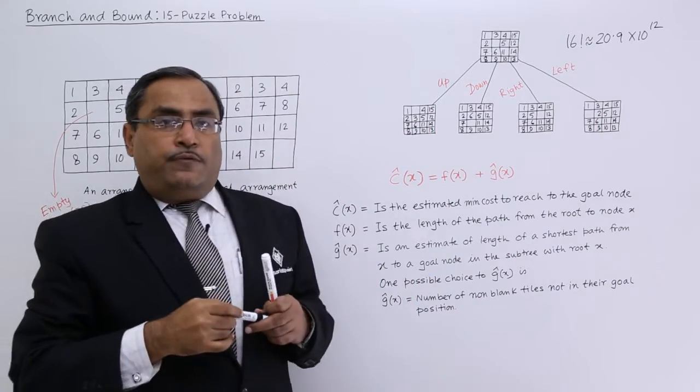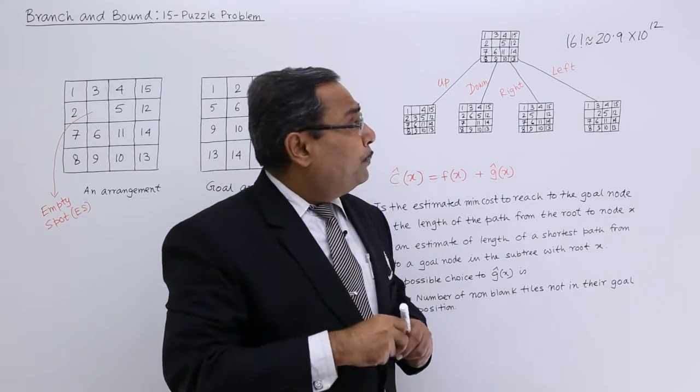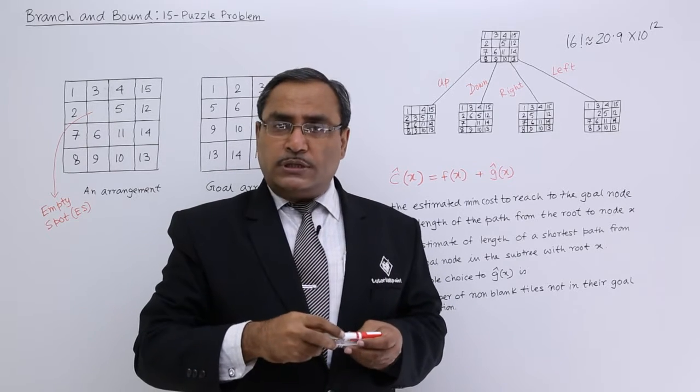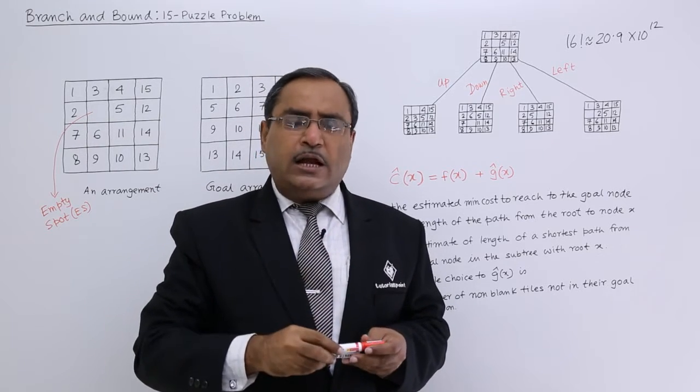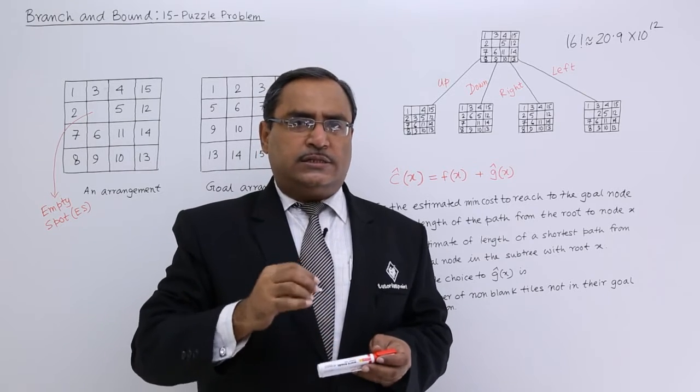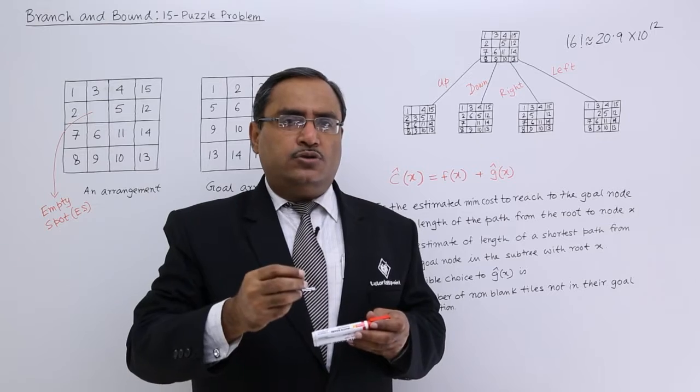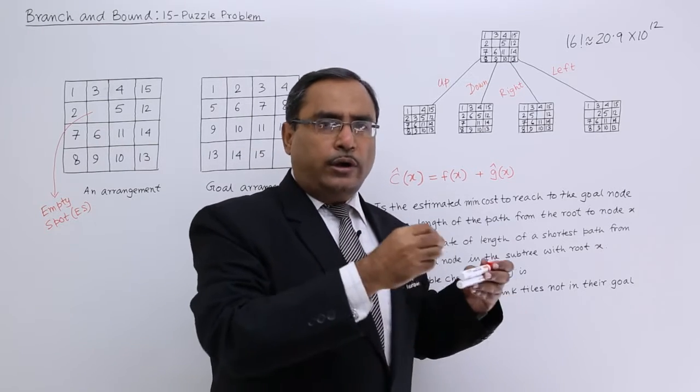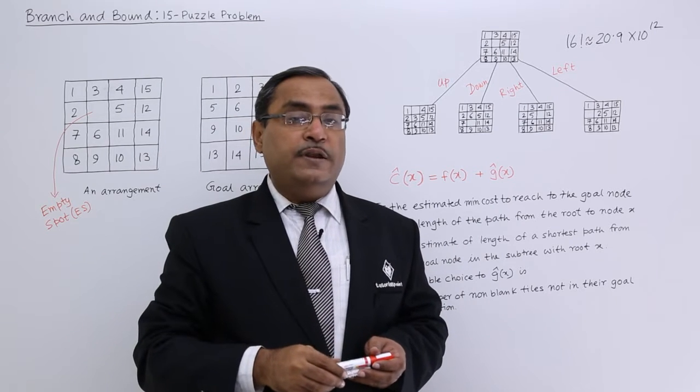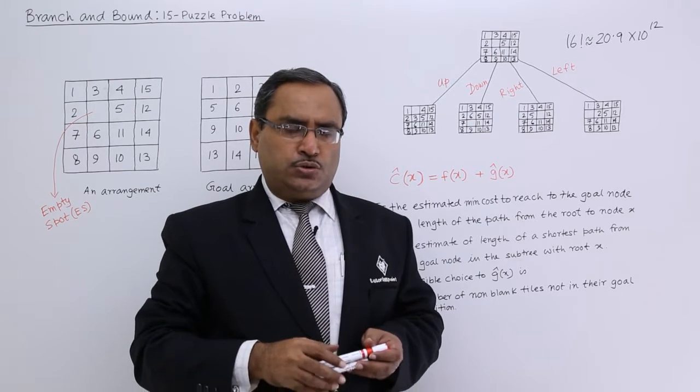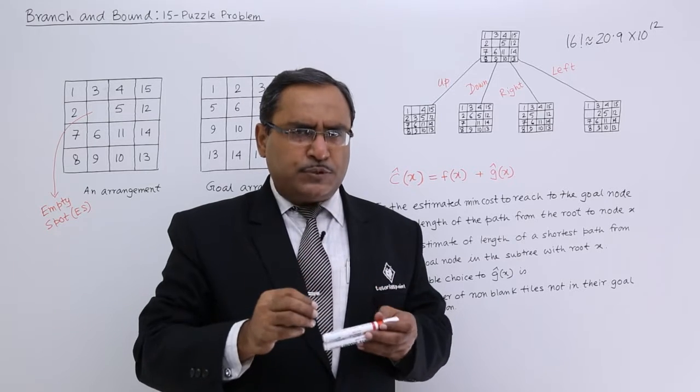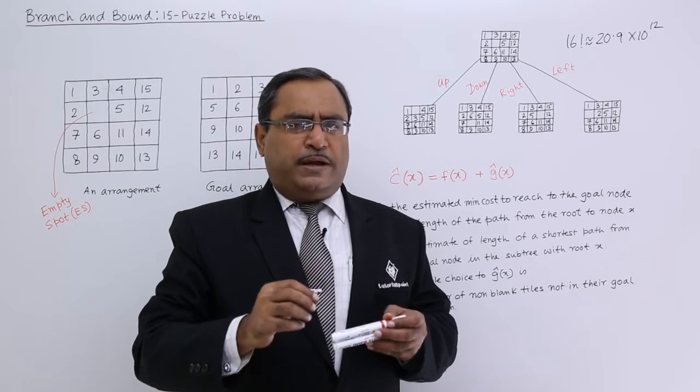From any initial state, half of these arrangements are possible to reach. If you consider the state space, that will be huge, and as a result, trying to reach the goal node from any initial board condition is a very difficult job. So we should have some heuristic, some estimate with the help of which we can reach to the goal node very easily.